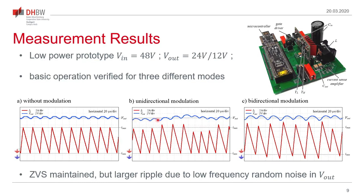In the middle, unidirectional modulation is shown — only the upper threshold varies, causing a random walk in the output voltage. If the maximum current is increased over several subsequent switching cycles, the average current increases and the output voltage rises, then decreases, creating a low-frequency output voltage variation. In contrast, with bidirectional modulation — changing both high and low thresholds — we get approximately the same output voltage variation as without modulation. The high-frequency ripple increases due to more inductor current ripple, but ZVS is maintained.